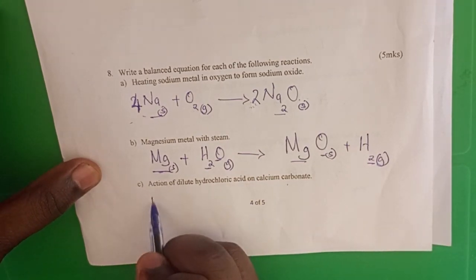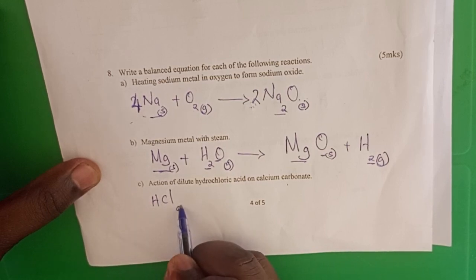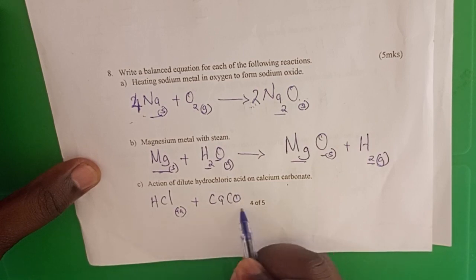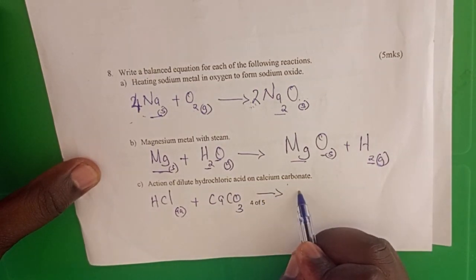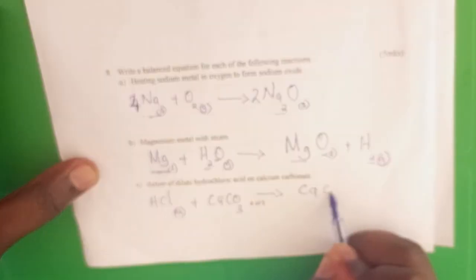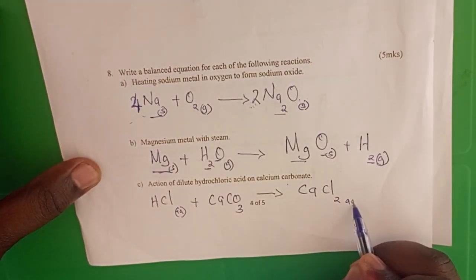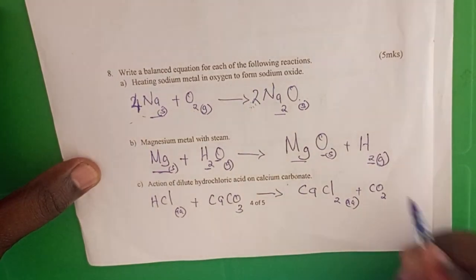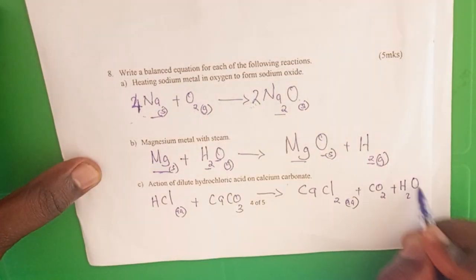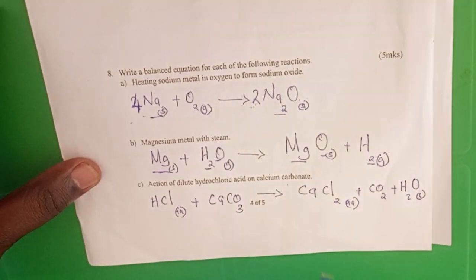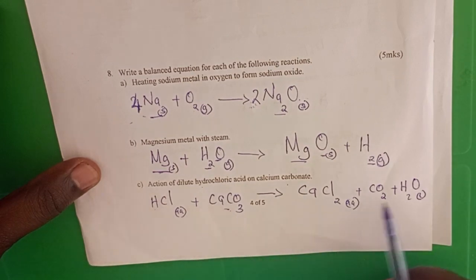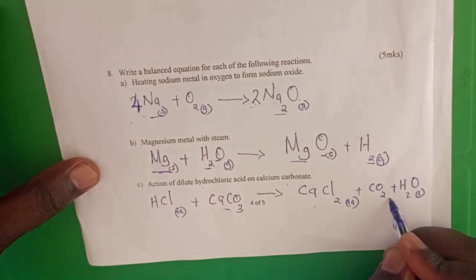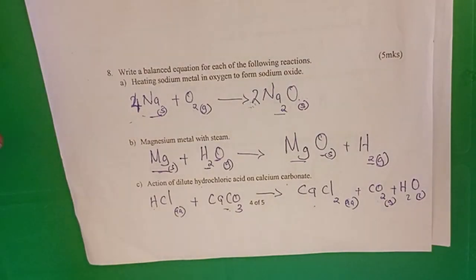Next: the action of dilute hydrochloric acid on calcium carbonate. Hydrochloric acid aqueous reacts with calcium carbonate to form calcium chloride aqueous, plus carbon dioxide gas, plus water. Acid plus carbonate gives salt, carbon dioxide, and water.